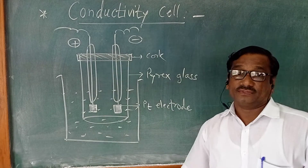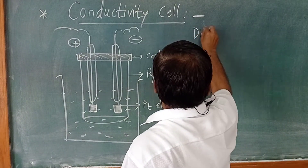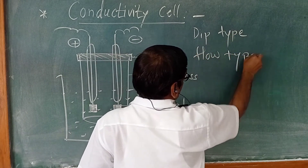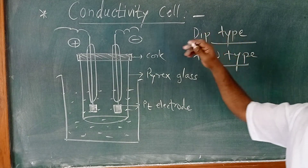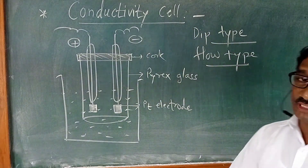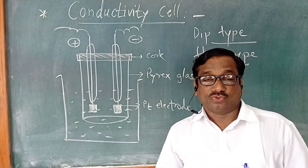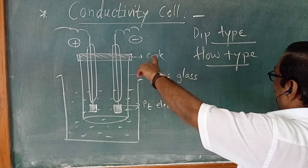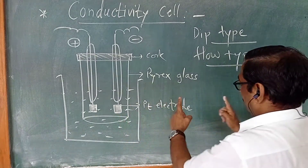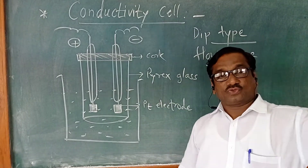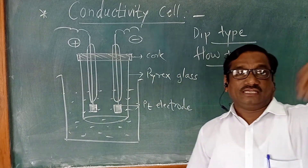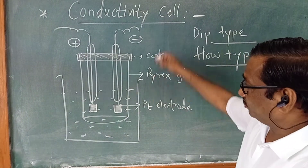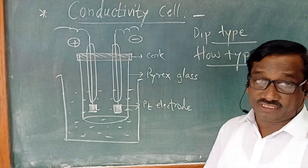This is the dip type of conductivity cell. The dip type is used in the laboratory, and the flow type is used in industry for continuous measurement. The flow type is essentially a U-shaped glass tube in which two electrodes are fixed and solution is flowing through that cell. There is an inlet and outlet, and you can measure the resistance or conductance of that solution continuously in the industry.